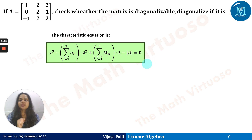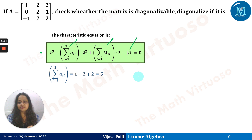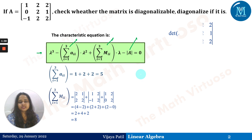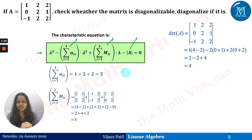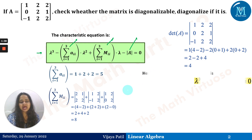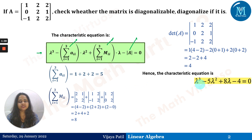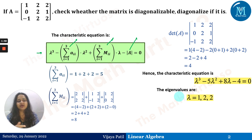We make use of the characteristic equation. The summation of a_ii is 5, the summation of M_ii is 8, and the determinant of A is 4. You can pause the video and check these values. From these, the characteristic equation is λ³ − 5λ² + 8λ − 4 = 0, giving eigenvalues λ = 1, 2, 2.